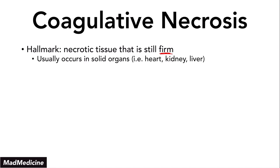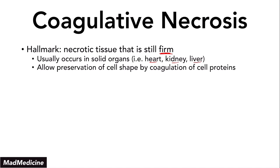The reason why solid organs like our heart, kidney, or liver go through coagulative necrosis is that it allows us to preserve the cell shape by coagulating the cell proteins. The preservation of the cell's shape and organ shape allows these solid organs to continue functioning — it doesn't mean the function is going to be the same as baseline before the injury, but they're able to continue functioning without having a significant decrease or dying off right away, unless the injury is too massive.